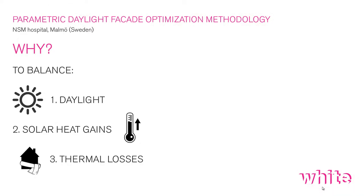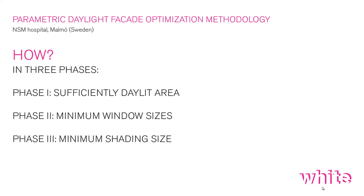The aim was to balance three aspects with conflicting interests: daylight, solar heat gains, and thermal losses. This is especially important with buildings that have high demands with regard to certification systems, where all three parameters have strict requirements. The methodology was divided into three phases: phase one was to identify the sufficiently daylit area, recommended in all projects at an early stage to verify enough daylight area in each floor plan. Phases two and three were to identify the minimum window sizes and minimum shading sizes needed, more applicable to buildings with strict certification requirements.